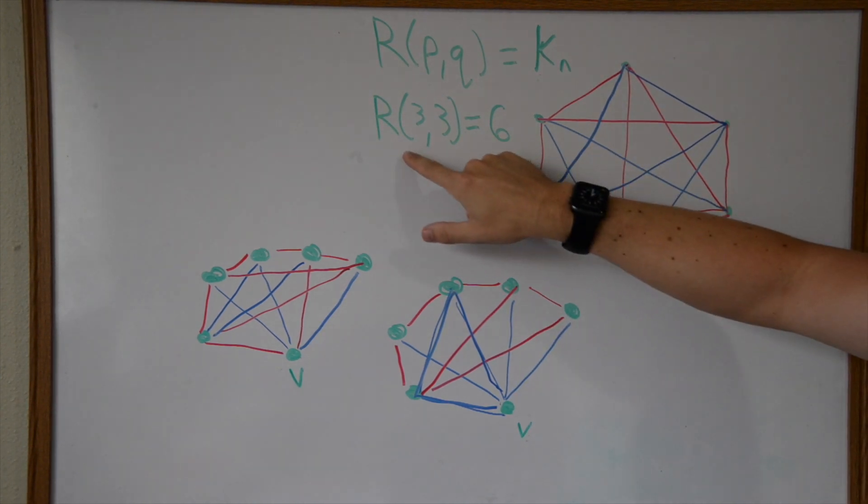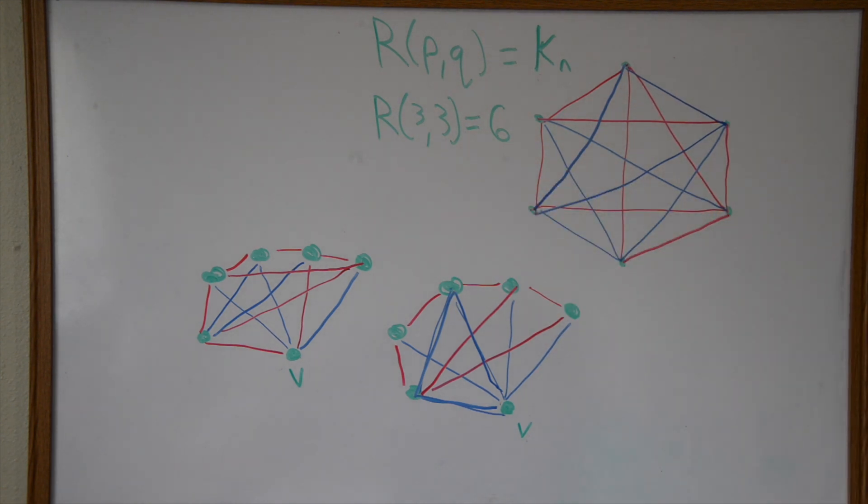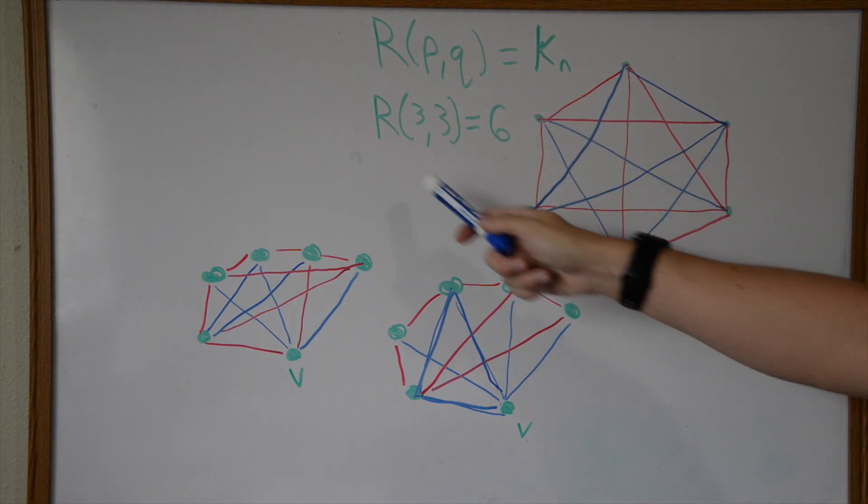This complete graph that is required to satisfy these conditions is very, very large, and as far as I know this is an NP problem. So it gets exponentially more difficult, and I don't know off the top of my head whether or not there's an algorithm that exists in computer science or elsewhere that finds K sub n for any p and q.